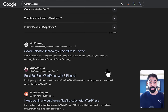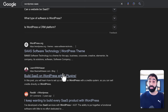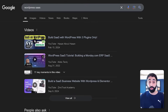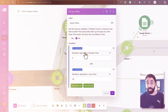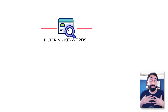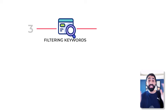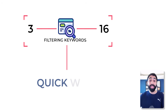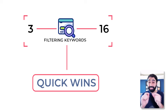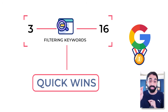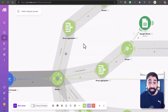For example, if you search for a keyword like 'WordPress SaaS' on Google, you'll find my website ranking number two — so that is position number two for that keyword. In our case here, we are filtering all keywords that our website is ranking between position 3 and 16. This is what we call Quick Wins — if you optimize a little bit, you can rank number one on Google and get more traffic.